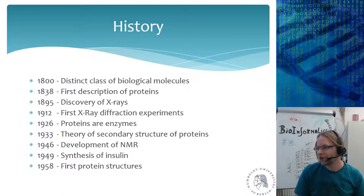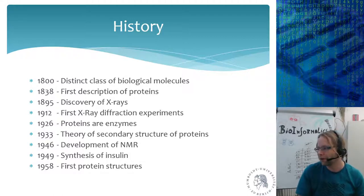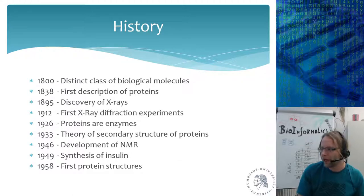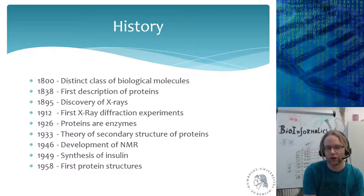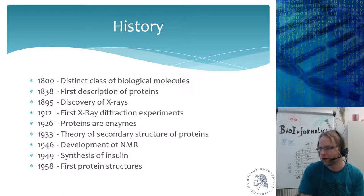The history of proteins starts around 1795-1800. At that point people were doing a lot of chemistry — the age of enlightenment — with discoveries like electricity and optics that made new discoveries possible. In the 1800s, they figured out that proteins were a very distinct class of biological molecules. Only 38 years later came the first real description of what a protein is: a chain built up of amino acids.